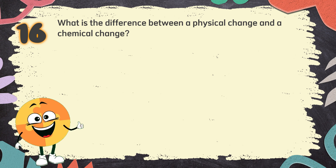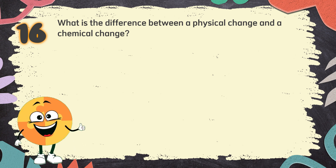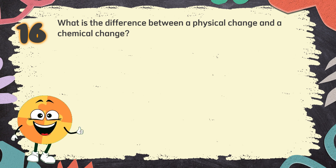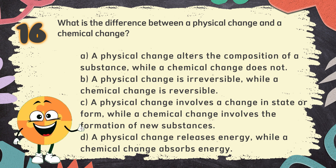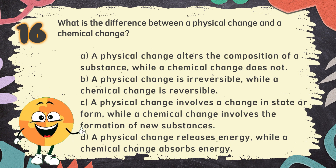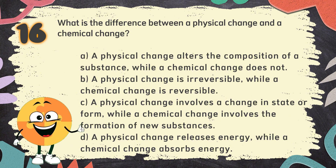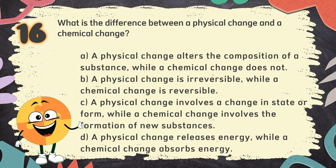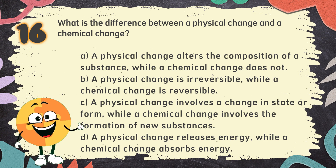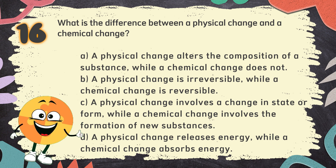Number 16. What is the difference between a physical change and a chemical change? The choices are: A. A physical change alters the composition of a substance while a chemical change does not. B. A physical change is irreversible while a chemical change is reversible. C. A physical change involves a change in state or form while a chemical change involves the formation of new substances. D. A physical change releases energy while a chemical change absorbs energy.